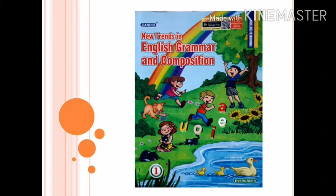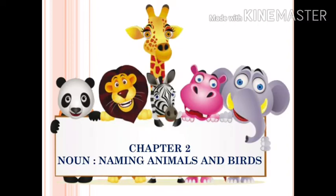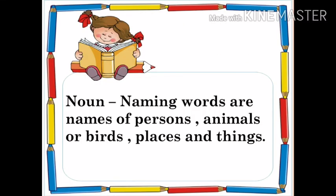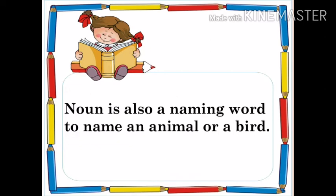The name of the book is New Trends in English Grammar and Composition. The name of the chapter is Nouns, Naming Animals and Birds. As you all know that naming words are names of persons, animals, birds, places and things. So it means a noun is also a naming word to name an animal or a bird.